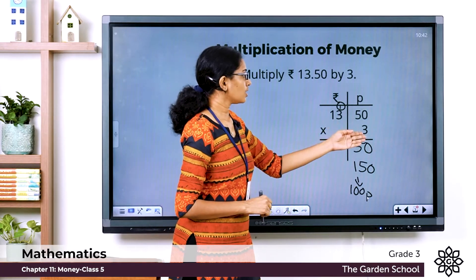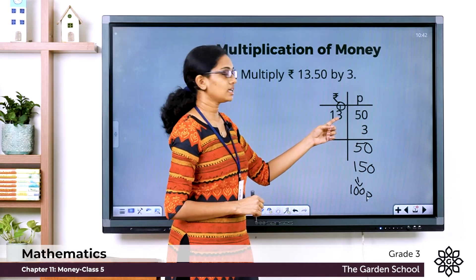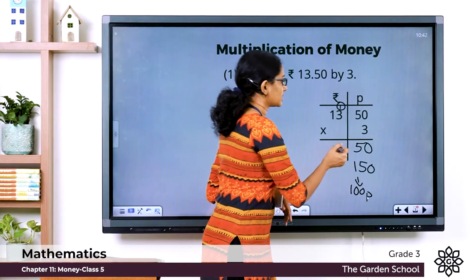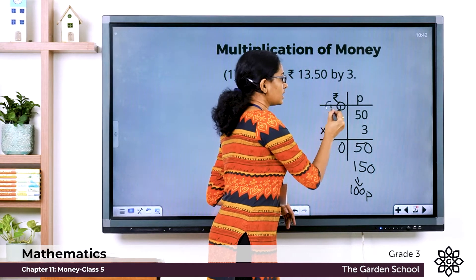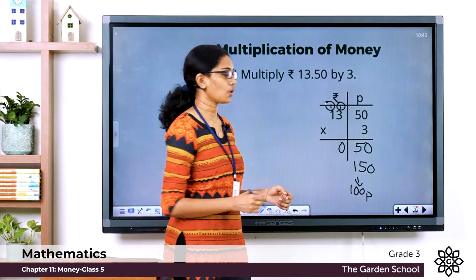Here now we have to multiply the rupee part. So here it is 3 into 3, 9 plus 1 it is equal to 10. 0 here, 1 carried over to the next place. So 3 into 1, 3 plus 1, 4.